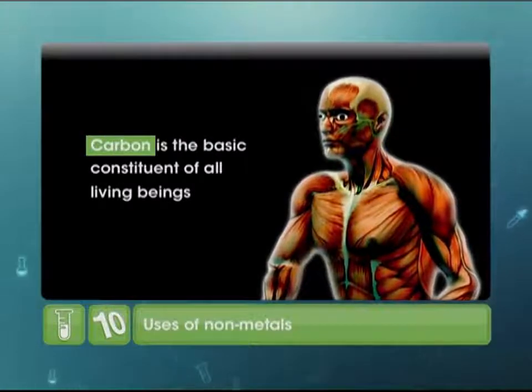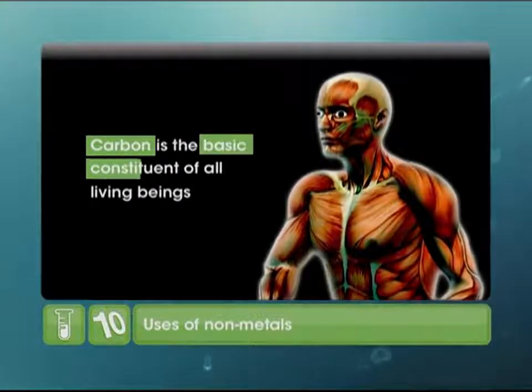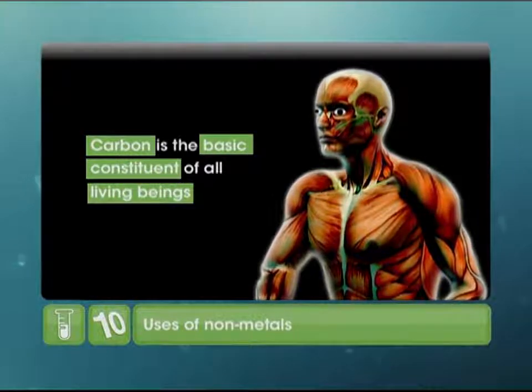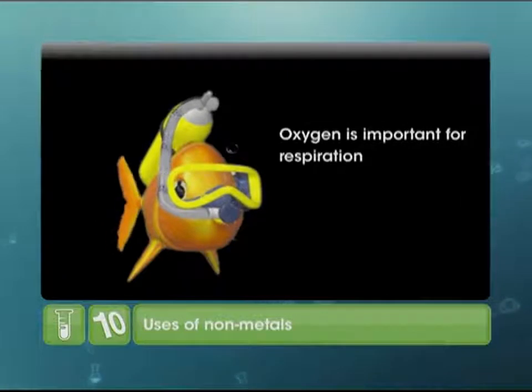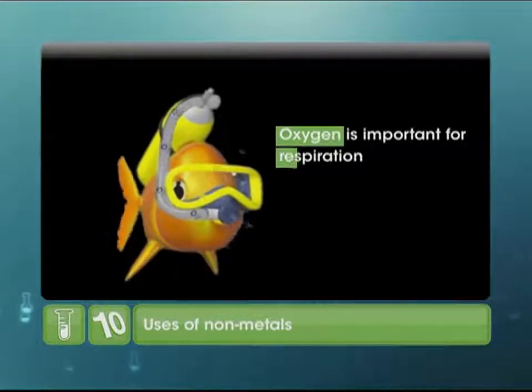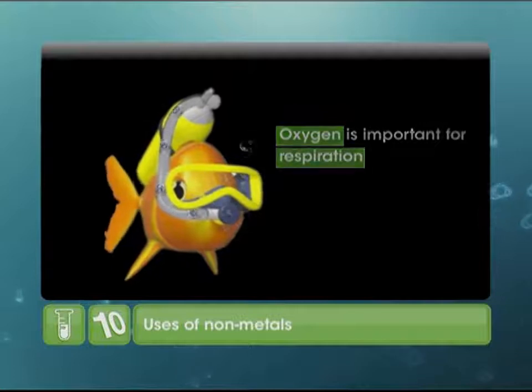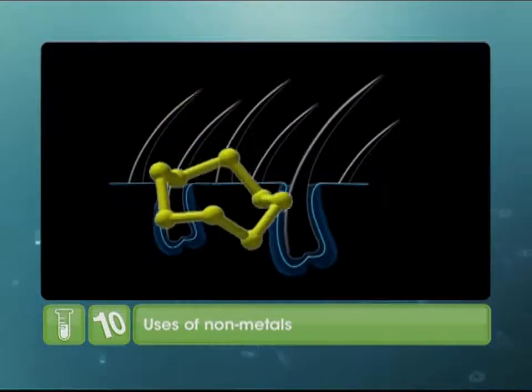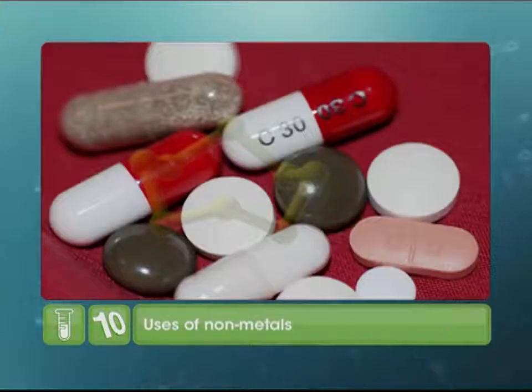Non-metals on the other hand are small in number and though they play a very important part in our lives, their uses are not as apparent as that of metals. Carbon is one of the most important non-metals as it is the basic constituent of all living cells. Another essential non-metal is oxygen, without which of course we cannot imagine life. Besides this, sulphur is present in our hair, onion, garlic, wool and in medicines. So as you've seen, both types of elements play a very significant role in our lives.